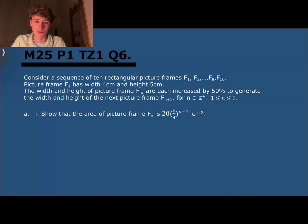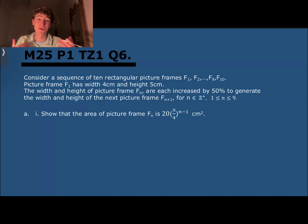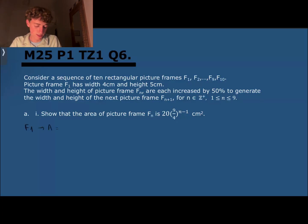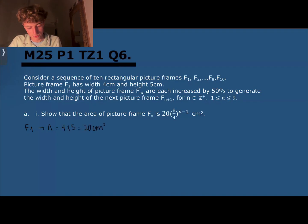That 1.5 is what the width and height are increasing by, but we need to figure out how much the area is increasing to make a series with the area. So for f1, the area is going to be 20 — that's 4 times 5 — so 20 centimeters squared. What's it going to be for f2?